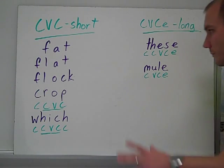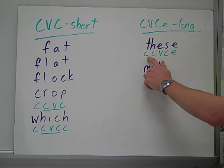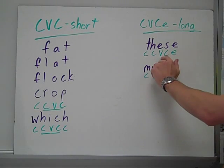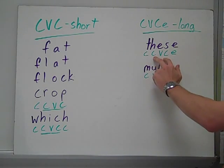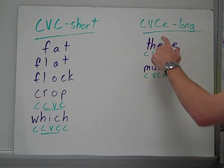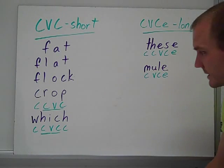Long vowels. Well, let's look at these. These. You have consonant, consonant, vowel, consonant, e. So in this case, you're looking for the vowel, consonant on both sides, and an e at the end. The e is what makes this e in the middle say its name and makes a long sound.